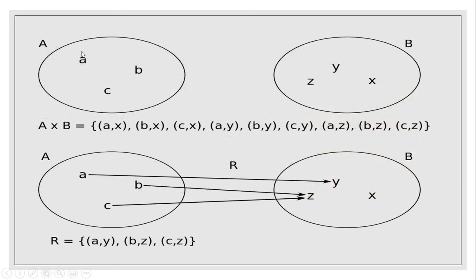Let's see an example. If we have set A consisting of elements a, b, and c, and set B consisting of elements x, y, and z, their Cartesian product is this. And we take a subset from the Cartesian product set, which is: (a,y), (b,z), (c,z).